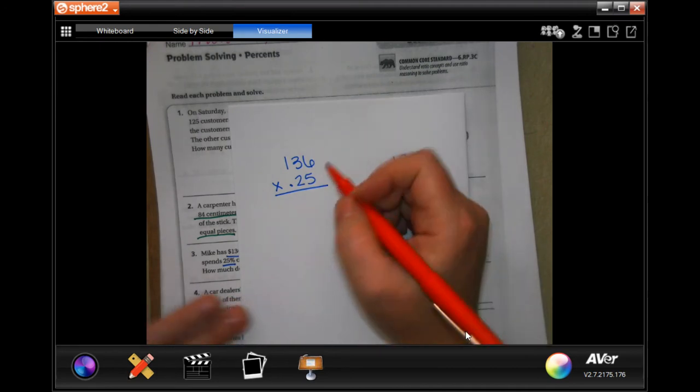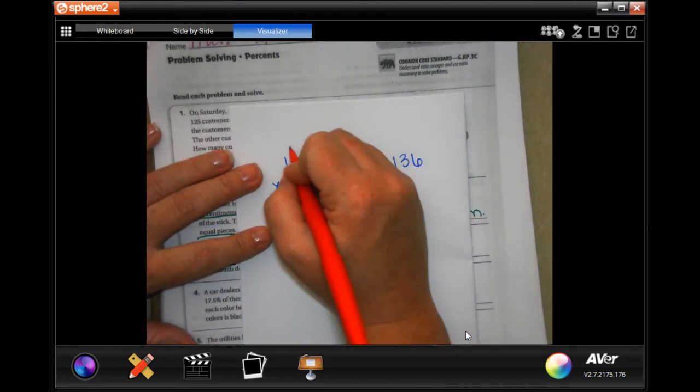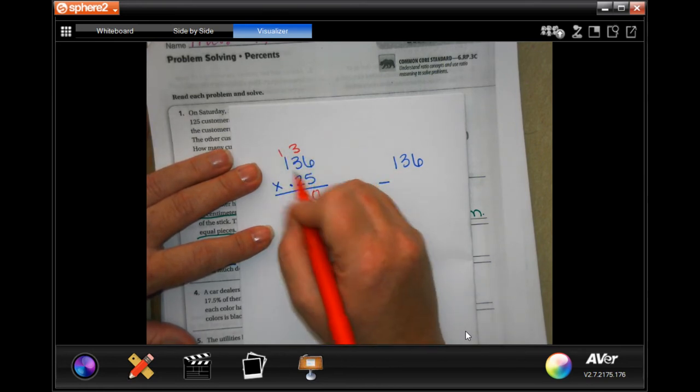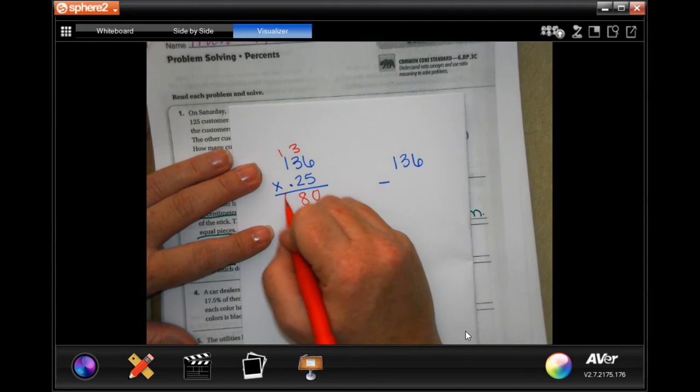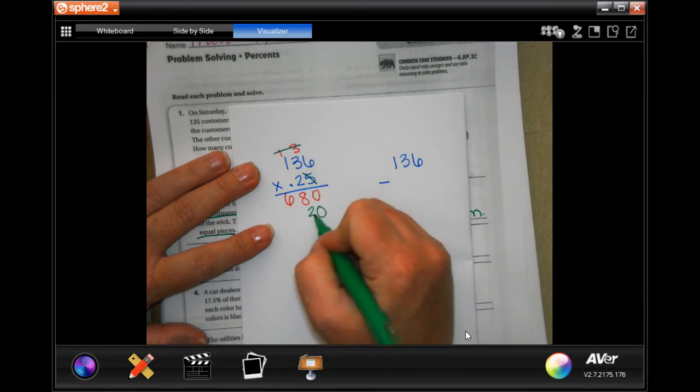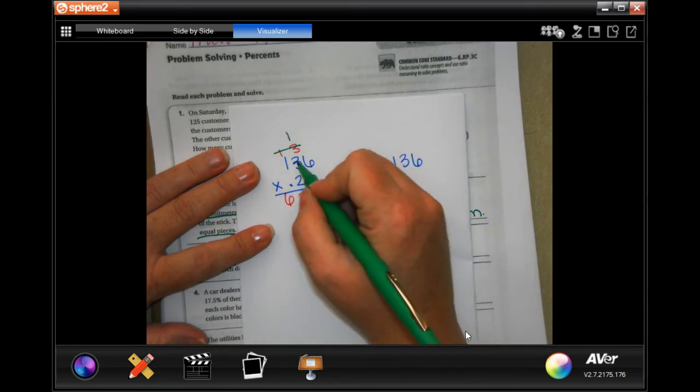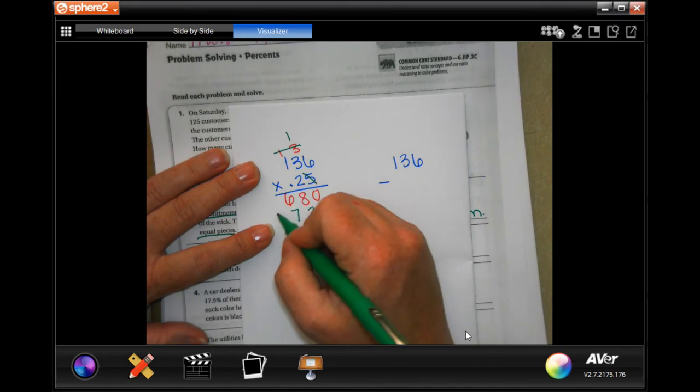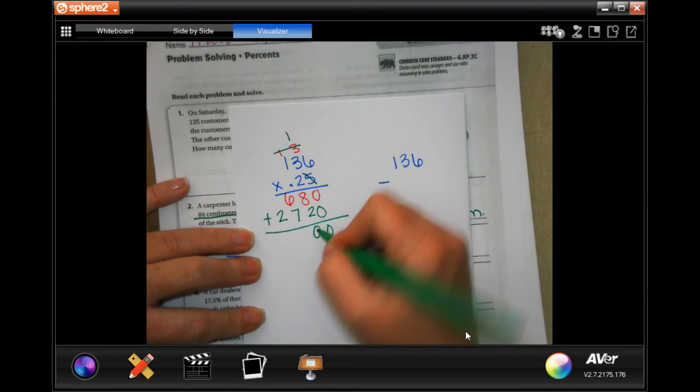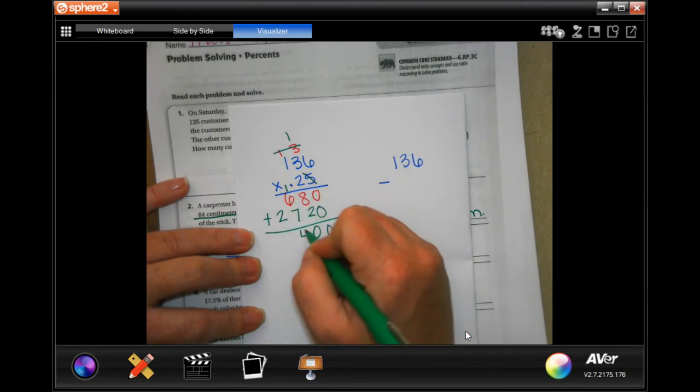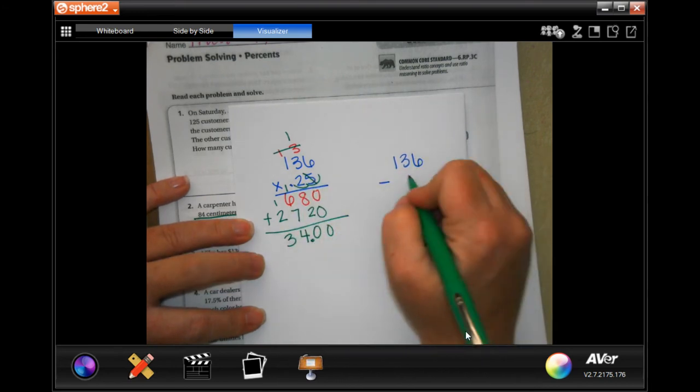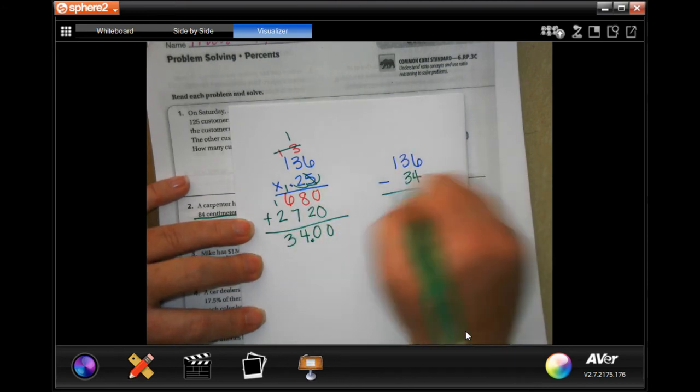5 times 6 is 30. Carry 3. 5 times 3 is 15. Plus, 3 more is 18. Carry 1. 5 times 1 is 5. Plus, 1 is 6. Tic-tac-toe. 2 times 6 is 12. Carry 1. 2 times 3 is 6. Plus, 1 is 7. And, 2 times 1 is 2. Add them up. 0, 10. Carry 1. 14. Carry 1. 3. So, go in 1, 2 places. 1, 2 places. He spent $34 getting into the park.